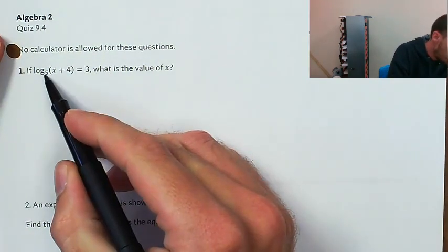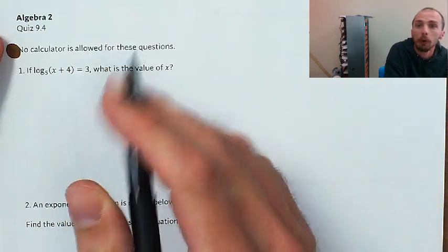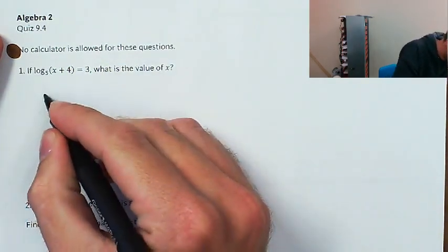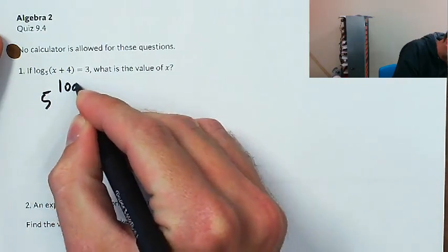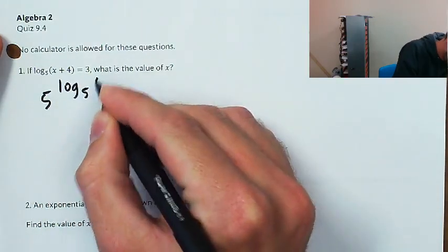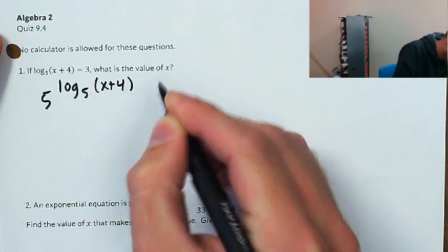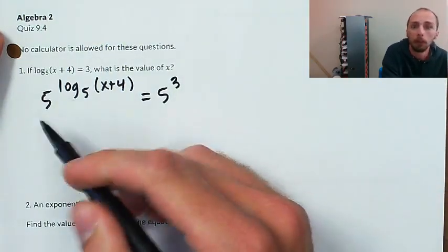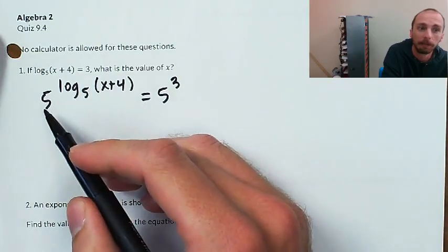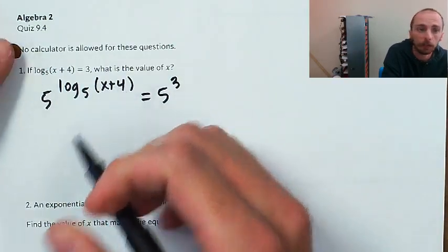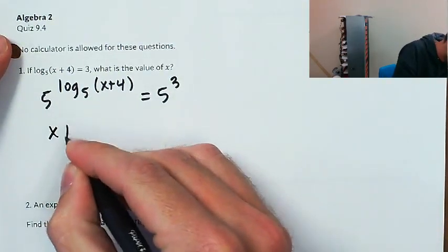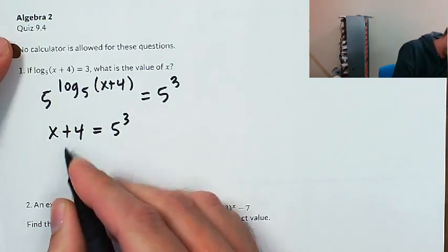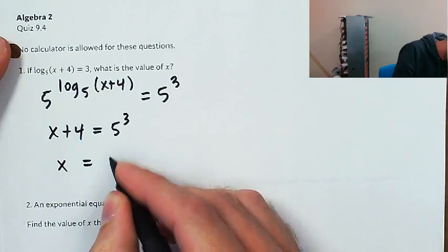Over here I've got log base 5 of x plus 4 equals 3. To get rid of this log of base 5, I need to take 5 to both sides as a power. So 5 to the log base 5 of x plus 4 equals 5 to the 3. That's one of our fundamental identities — 5 to the log base 5 of a thing is just going to be that thing. So I've got x plus 4 equals 5 to the 3rd, and then I'll solve for x by subtracting 4 from both sides.